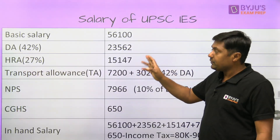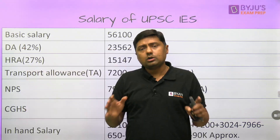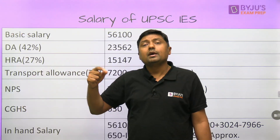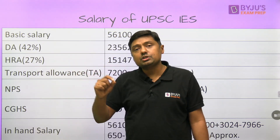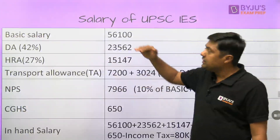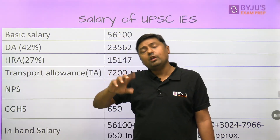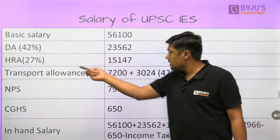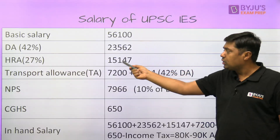Then HRA — it depends upon the city category: X, Y, and Z. For metros (X), it is 27%. For second-grade cities (Y), it is around 18%. For third-level cities (Z), it is around 9%. HRA also depends upon the DA level; if DA crosses a certain threshold, the HRA percentage automatically increases. At present, 27% of the basic salary gives approximately 15,147.